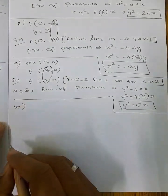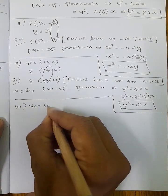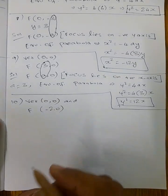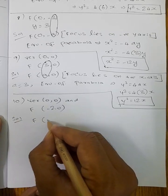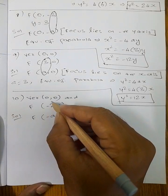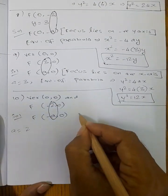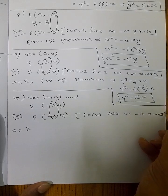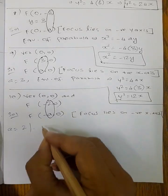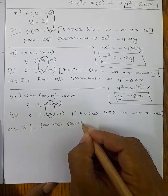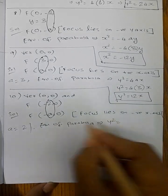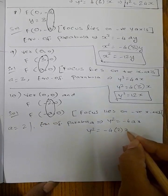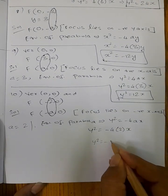10th question: vertex (0, 0) and focus (-2, 0). Focus lies on negative x-axis. Compare formula: a = 2. Equation of parabola y² = -4ax, so y² = -4 × 2, therefore y² = -8x.